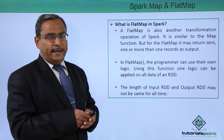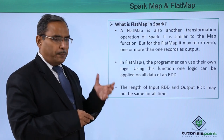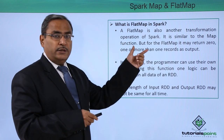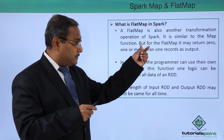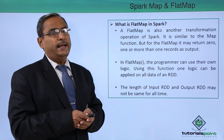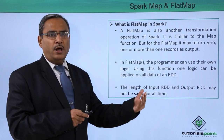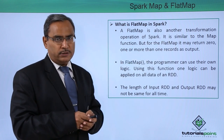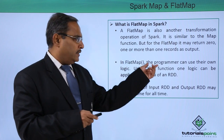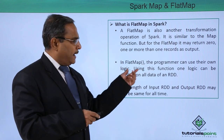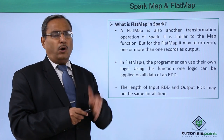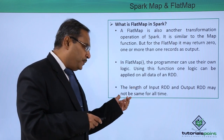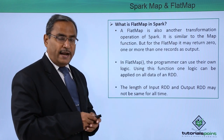What is flat map in Spark? A flat map is also a transformation operation of Spark and it is similar to the map function. But for flat map, it may not return the same size — it may return 0, 1, or more than one records as output. In case of map, we had one input and one output, but in case of flat map, it returns 0, 1, or more than one records. The programmer may use their own logic, and one logic will be applied to all data of the input RDD. The length of the input RDD and the output RDD may not be the same in case of the flat map method.